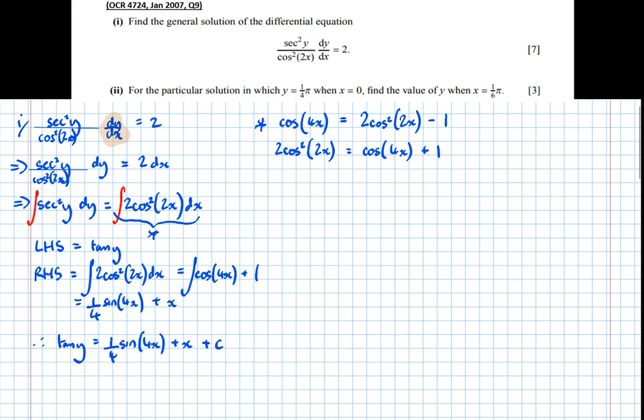So that's part 1 done. We've solved the differential equation. We've found the general solution. And by general solution, it means it had a plus c in it. Part 2, which I'm going to do here, asks us to find a particular solution for which y equals pi over 4, as I prefer to write it, when x equals 0. So we're going to use those particular values to find out what the plus c is.